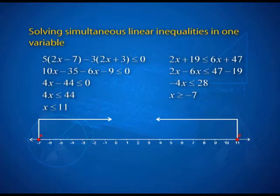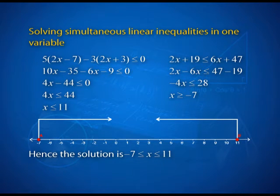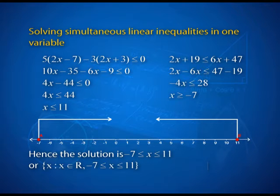Let us plot these on the number line. When we plot x ≥ −7, it points towards the right hand side, and x ≤ 11 points towards the left hand side. Since both inequalities include equality, we have filled circles at −7 and 11. The common solution is depicted between −7 and 11. Hence, the solution is −7 ≤ x ≤ 11, or in set form {x ∈ ℝ : −7 ≤ x ≤ 11}, and in interval form x ∈ [−7, 11].